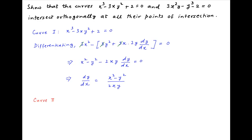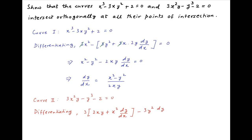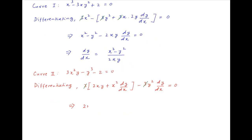Now moving on to the second curve, which is 3x squared y minus y cubed minus 2 equals 0. Differentiating with respect to x, the first term — taking 3 out of the brackets — we get 2xy plus x squared times the derivative of y, minus 3y squared dy/dx equals 0. Collecting all terms with dy/dx, we get 2xy plus (x squared minus y squared) multiplied by dy/dx equals 0. Therefore dy/dx for the second curve equals minus 2xy divided by (x squared minus y squared).